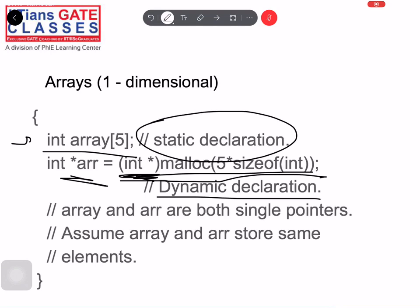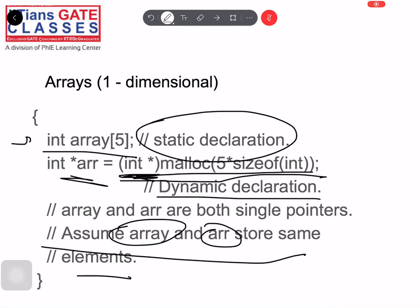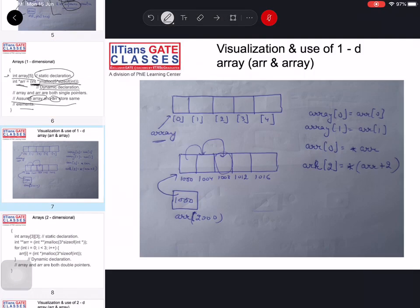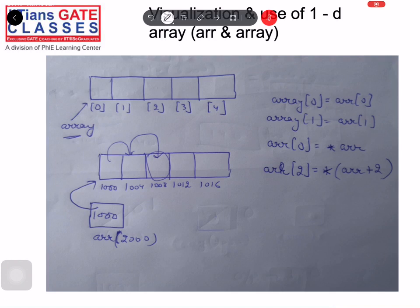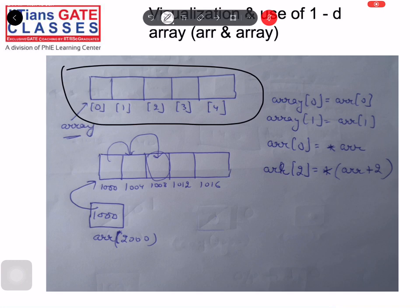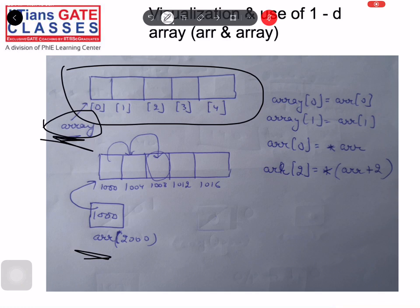For a static 1D array declaration, the array has five elements at indices 0 through 4. An important point: the array name 'array' acts like a single pointer but is not exactly one — no separate memory is allocated for the name itself. However, for the dynamically declared 'arr', memory is specifically assigned to store the pointer. This is the basic difference between the two.